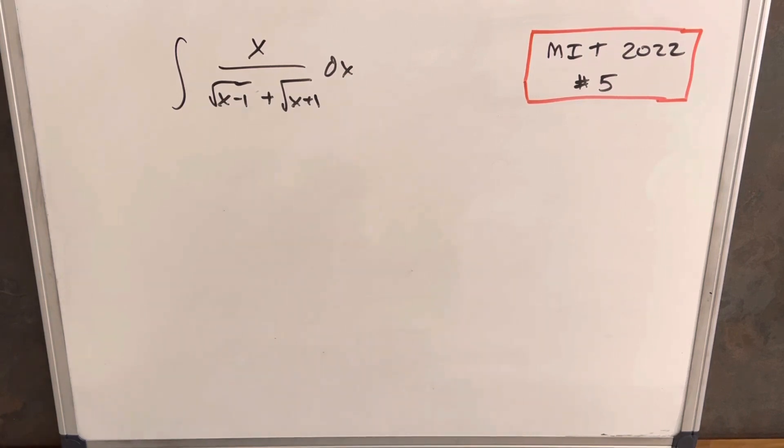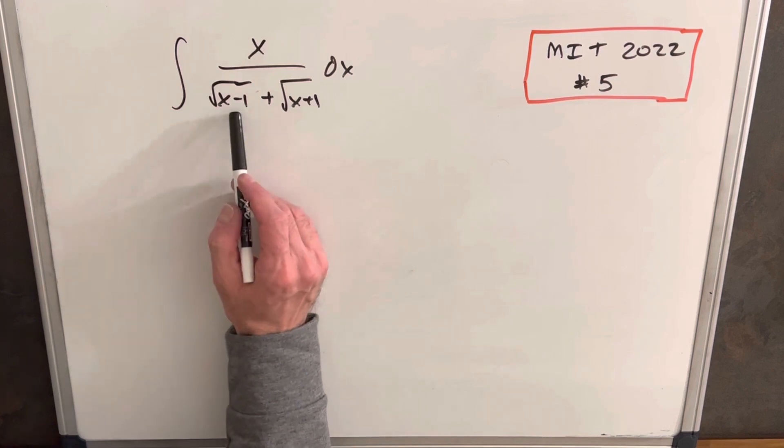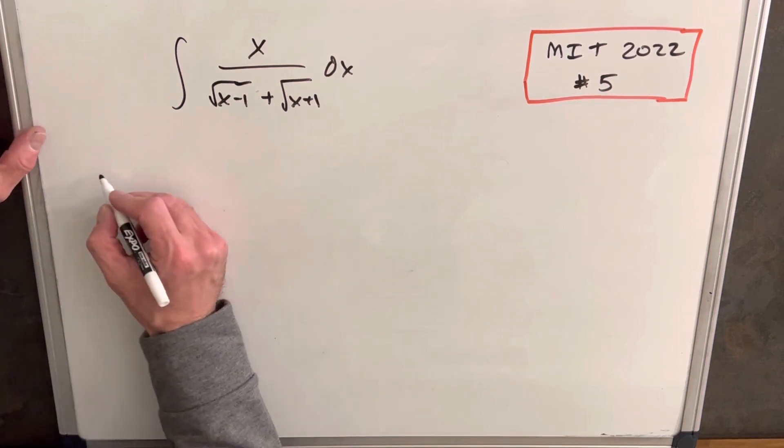Hey, we have here an integral from MIT Integration Bee 2022. This is problem number five. So we have the integral of x over the square root of x minus 1 plus the square root of x plus 1. I think what I want to try to do is just see what I can do to get rid of these radicals in the denominator to start with.